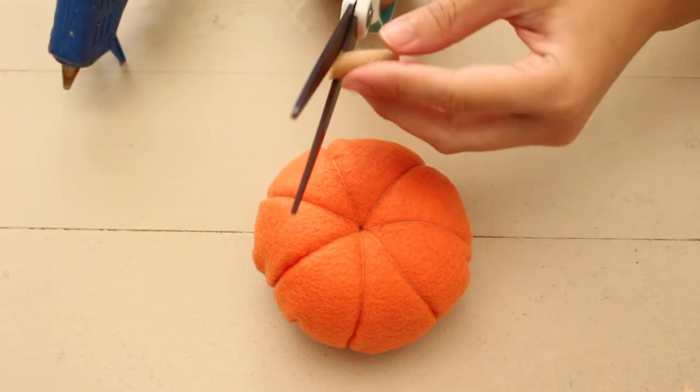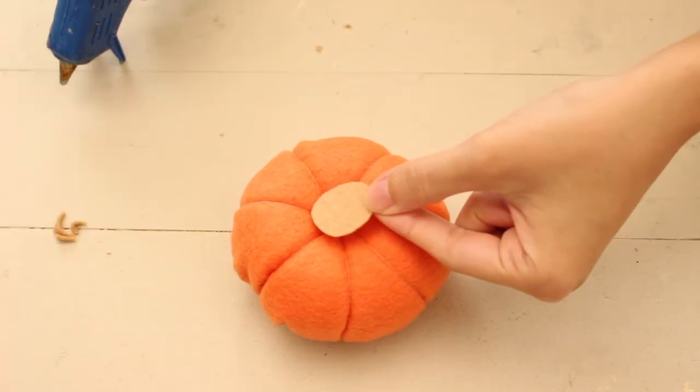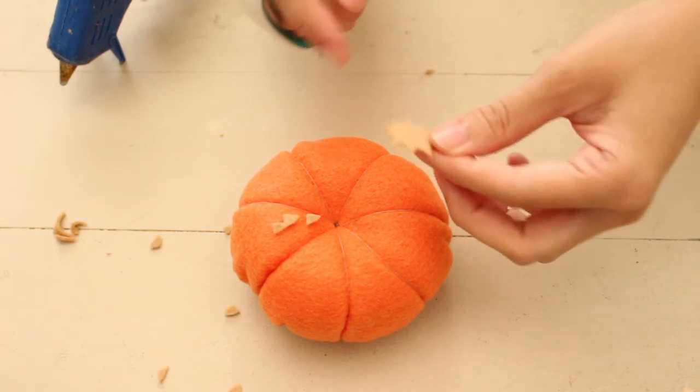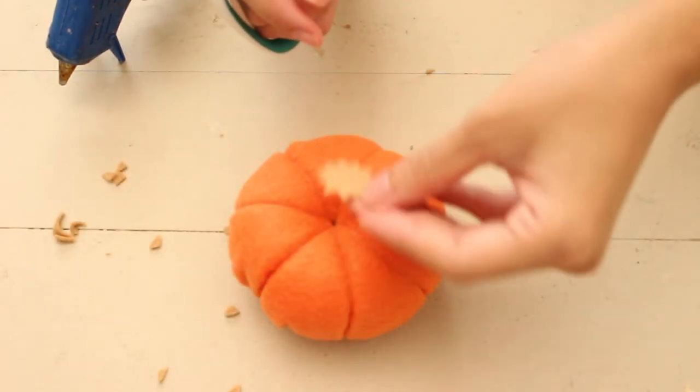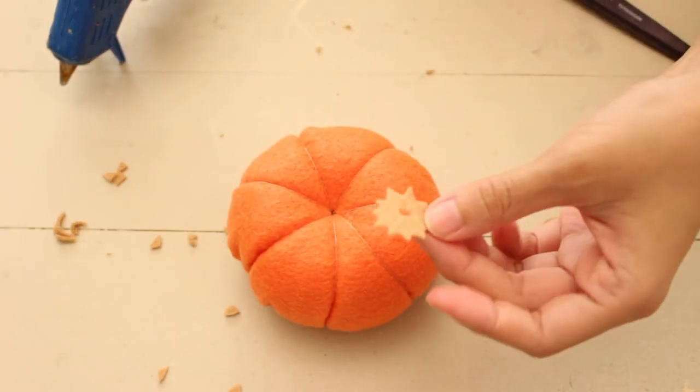Then, cut the end at an angle. Cut a small circle with spikes around it. And make a hole in the center to fit the stem.